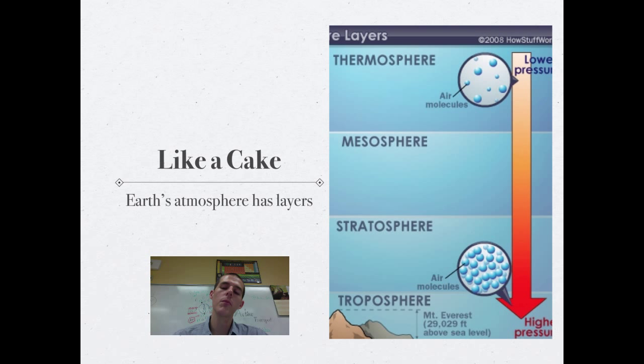Before we get into the actual nuts and bolts of determining climate, I need to do a quick review with you about layers of the atmosphere. Your layers of the atmosphere are as follows: troposphere, stratosphere, mesosphere, thermosphere, and then the exosphere.